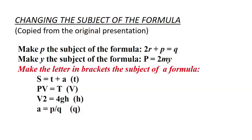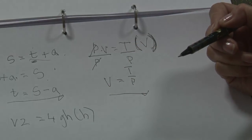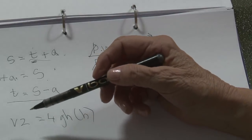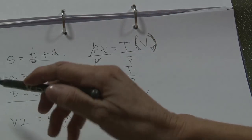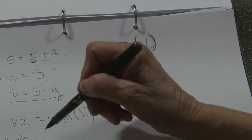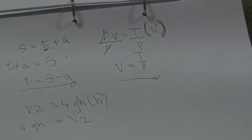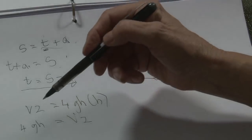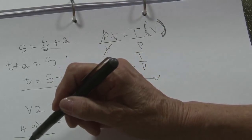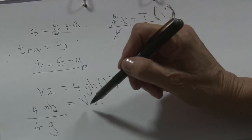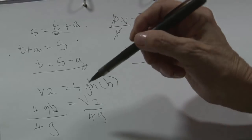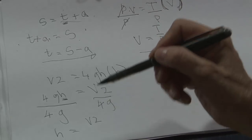The next one: V² equals 4GH, and H should be the subject of the formula. I want to have 4GH equals V². I divide by 4G on both sides so that I can cancel. So my answer is H equals V² over 4G.